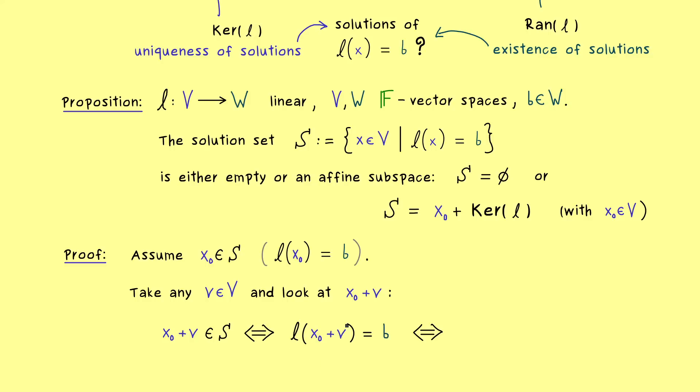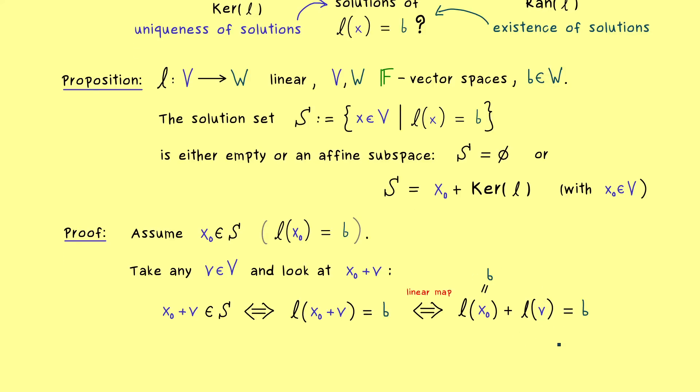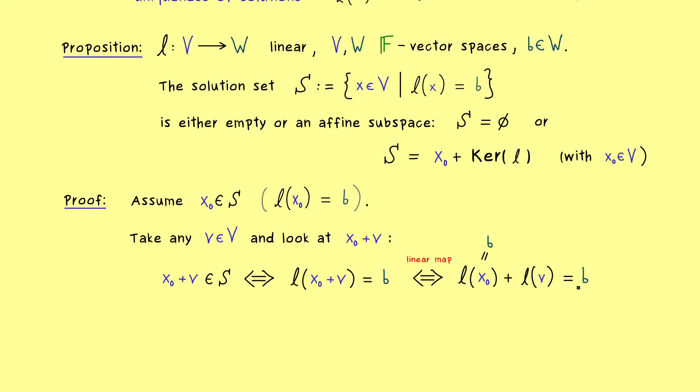But now you should see here on the left hand side we can use the linearity of our map l. So we can just pull out the addition and we get l(x₀) + l(v). But now by assumption we already know that l(x₀) is already b. Hence, we can subtract it on both sides and we get that l(v) is equal to the zero vector. And essentially this is it because it means that v has to lie in the kernel of l.